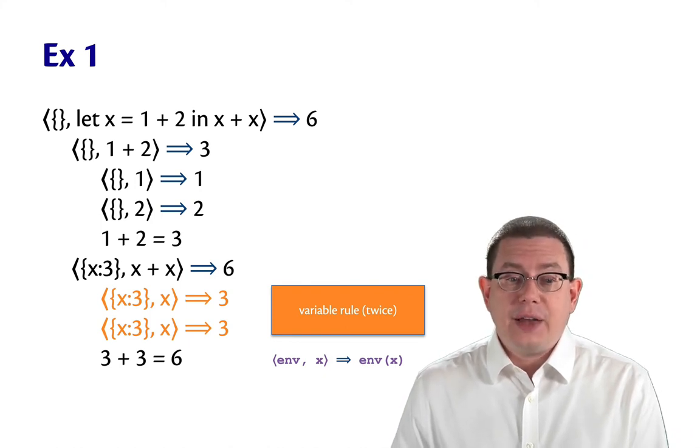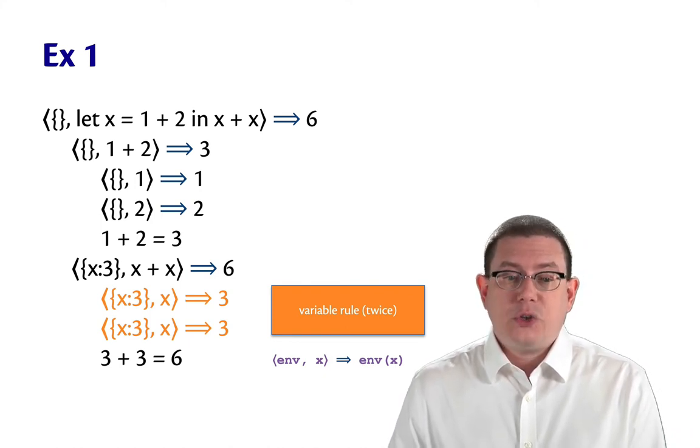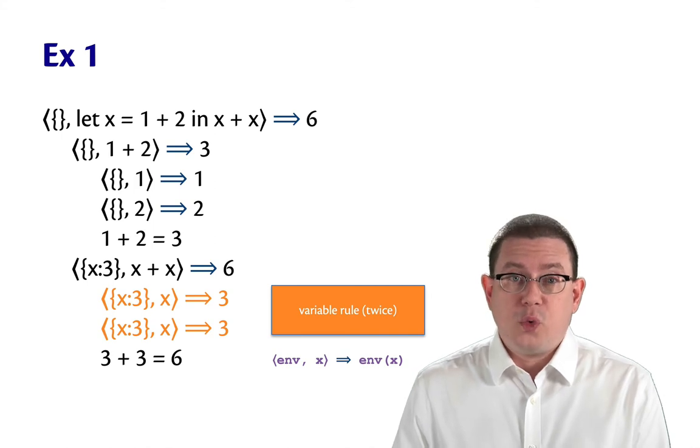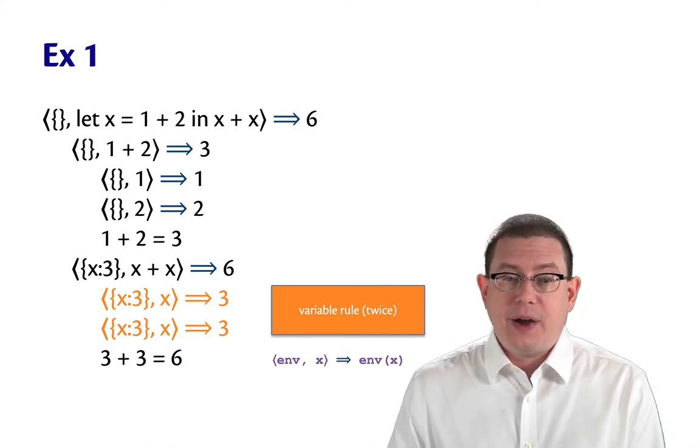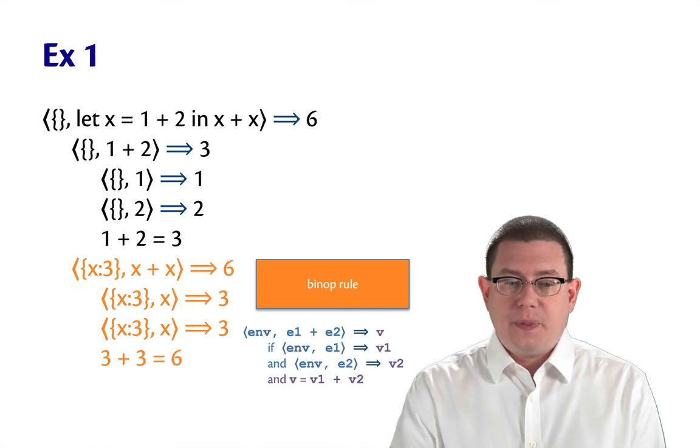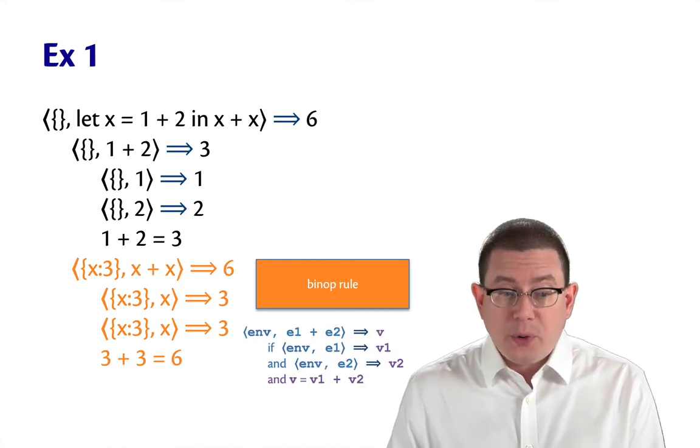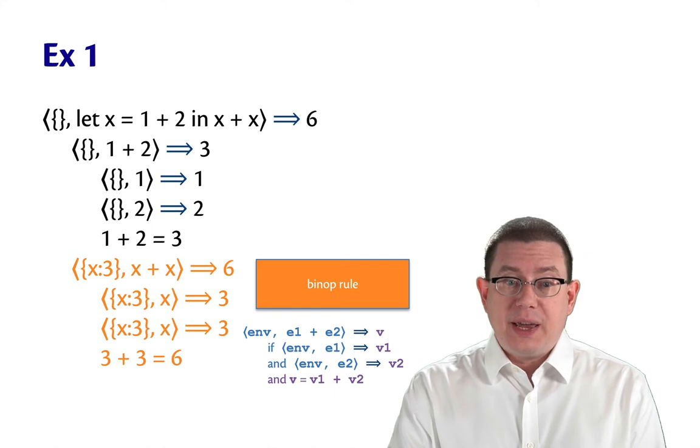Again, I need to do that for X plus X. So here I use the variable rule twice. I'm looking up X inside of the dynamic environment and finding its value, which is three. I then use the binary operator rule to add three and three together and get six.